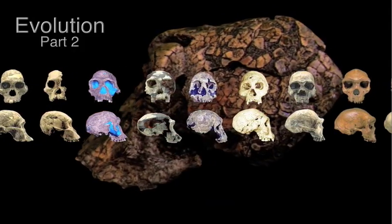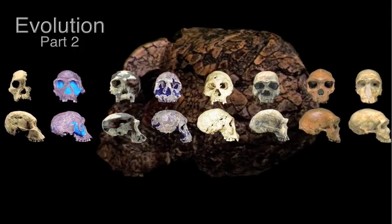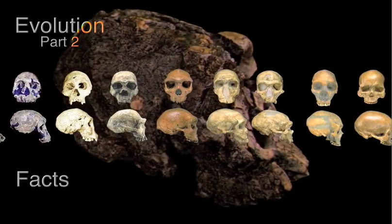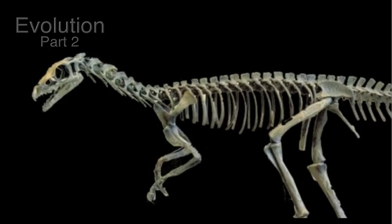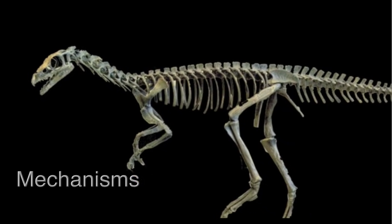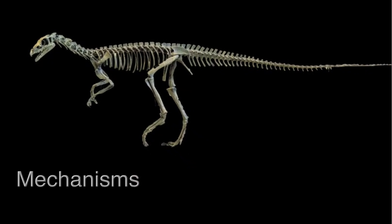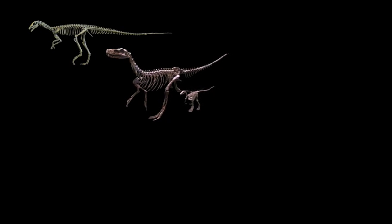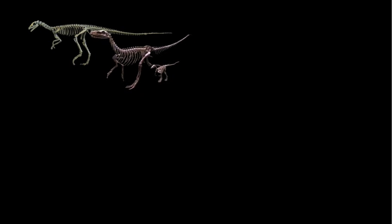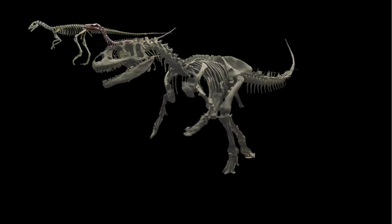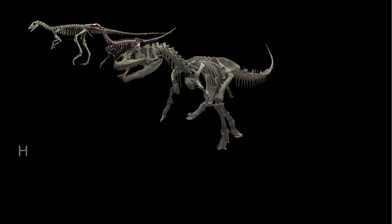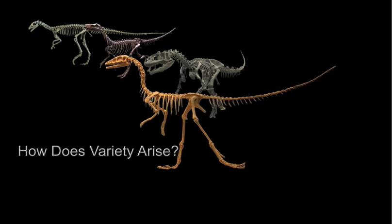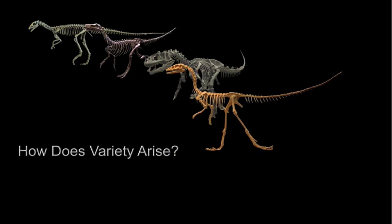In part one of our story of evolution, we demonstrated the facts of evolution. In part two, we will explore the mechanisms. And to do that, we need to ask and answer just two questions. How does variety arise in the genomes of individuals in a group? And how does that variety give rise to new species?